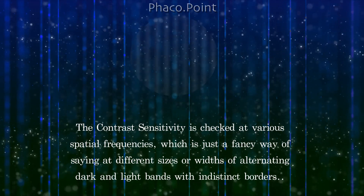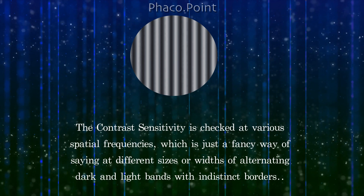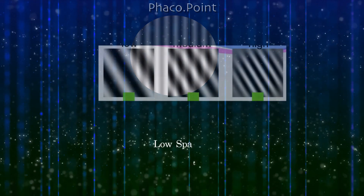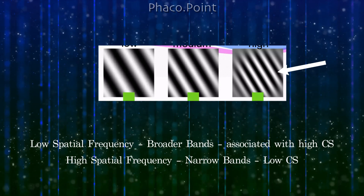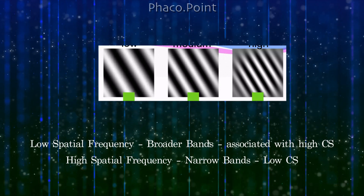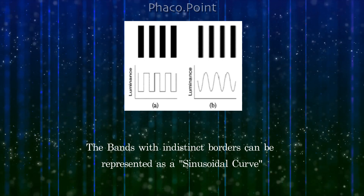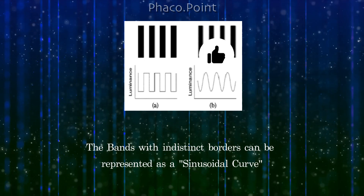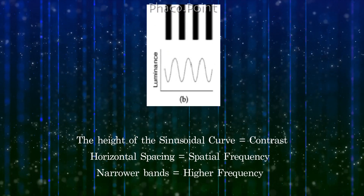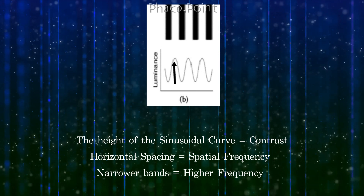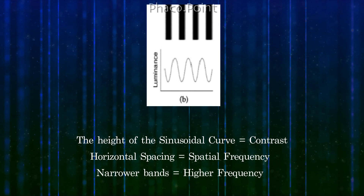Contrast sensitivity is checked at various spatial frequencies, which is simply tested at different sizes or widths of alternating dark and light bands with indistinct borders. Low spatial frequency implies broader bands, which have high contrast sensitivity, and high spatial frequency implies narrower bands, which are associated with lower contrast sensitivity. Since contrast is measured between dark and light bands with indistinct borders, these bands are represented as a sinusoidal curve and not a box curve. The height of the sinusoidal curves indicates contrast, while the horizontal spacing between peaks indicates the spatial frequency.